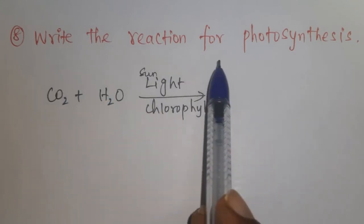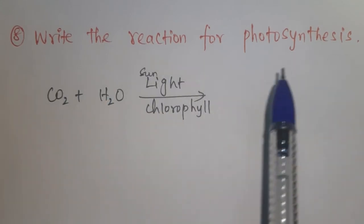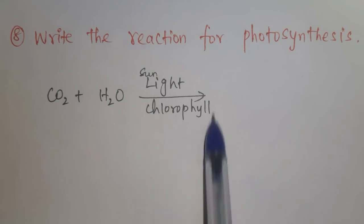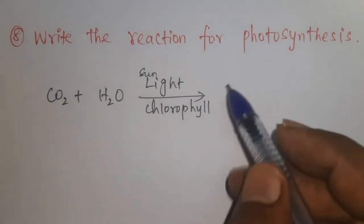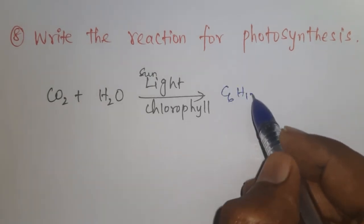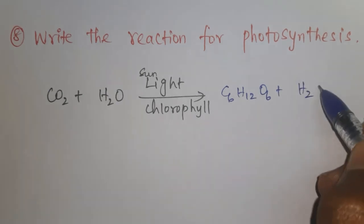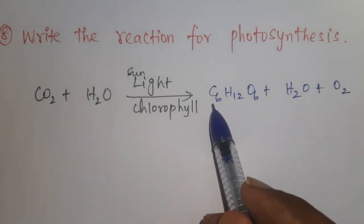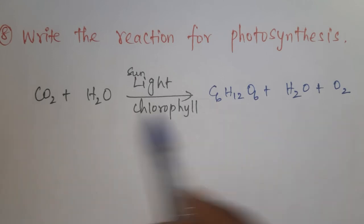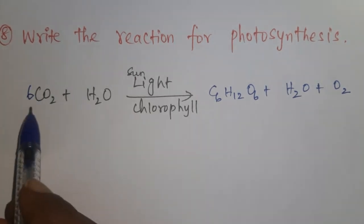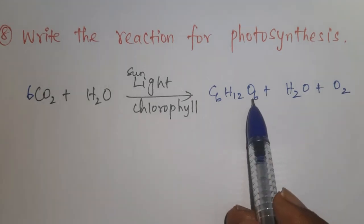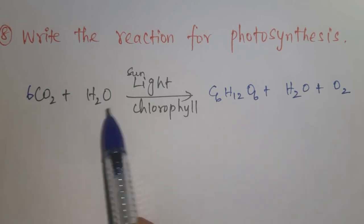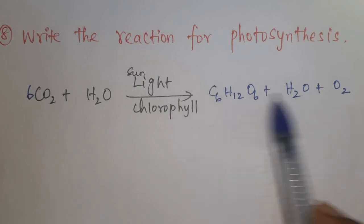Question number eight: write the reaction for photosynthesis. Carbon dioxide, water, sunlight, and chlorophyll react together to give glucose (C6H12O6), water, and oxygen. Carbon has 6 atoms on the product side, so we place a coefficient of 6 before CO2. Then we balance hydrogen: with 12 water molecules on the reactant side, we get 24 hydrogen atoms, matching the 12 H2 on the right when 6 water is produced.